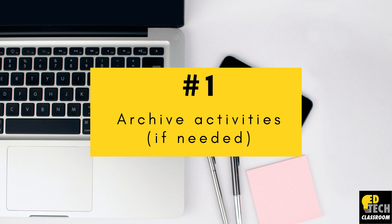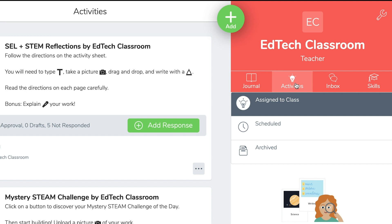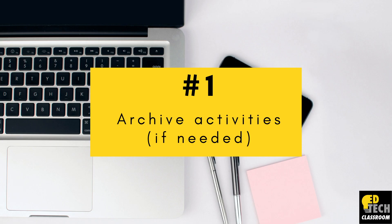Or, if you are assigning students summer work through Seesaw, you can archive old activities to allow your students to focus on their assigned summer work. To archive your activities: first, click on the Activities tab. Then look for the activity you want to archive, click the dot-dot-dot, and then click Archive Activity. Once completed, the activity will still be in your library — meaning you can reassign it to students, assign it to different classes, and continue to view students' responses under Archived.